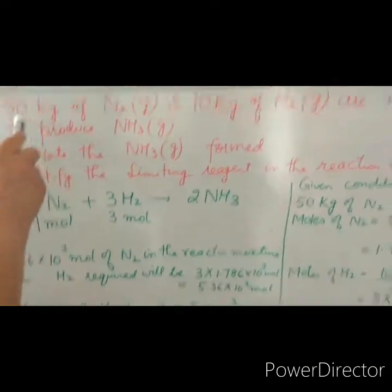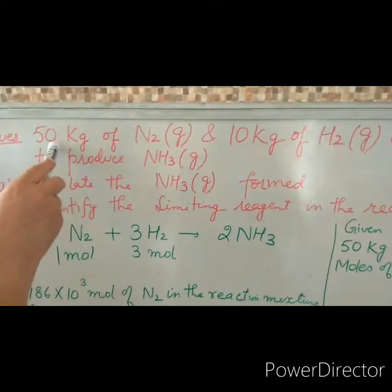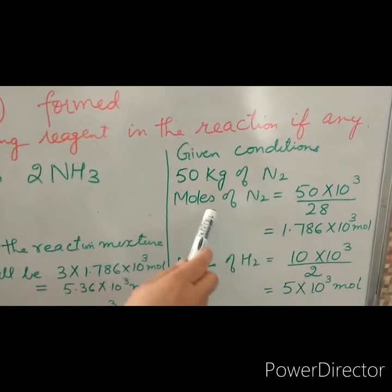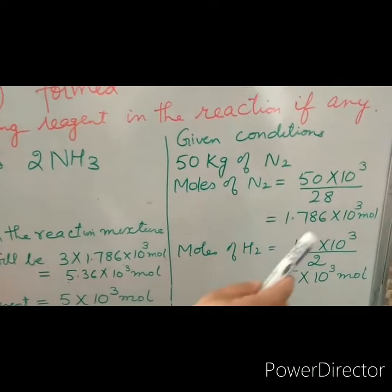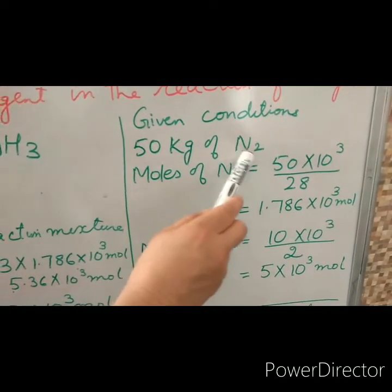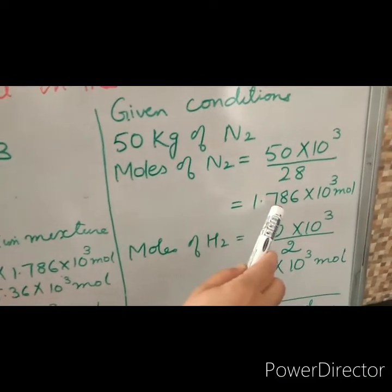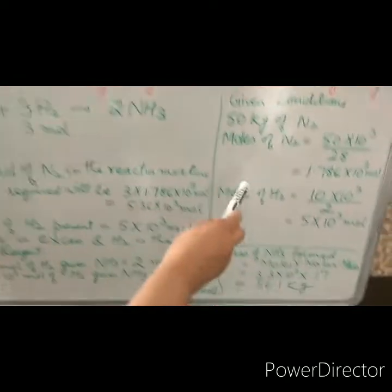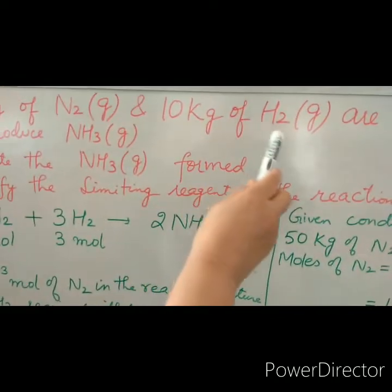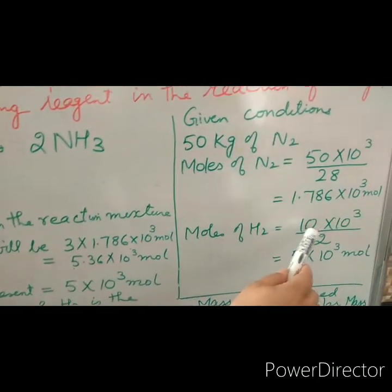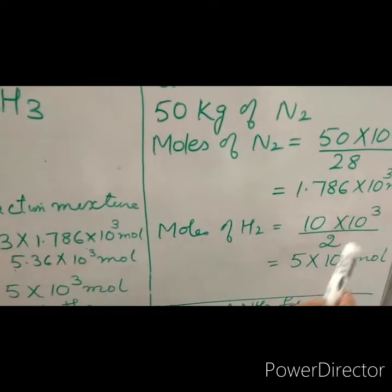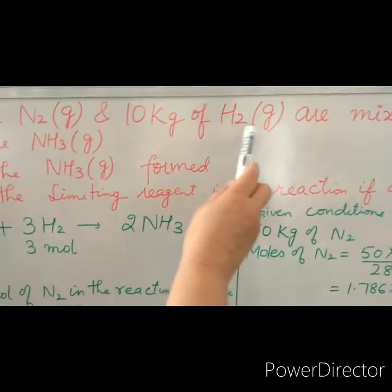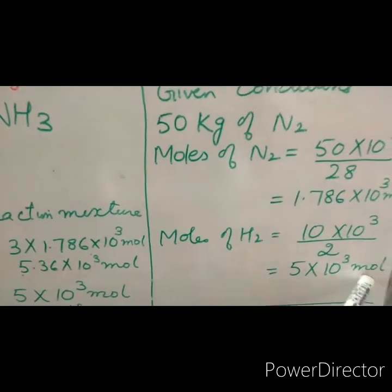Now let us calculate the number of moles available. From 50 kg of nitrogen, the moles will be weight divided by molar mass, giving 1.786 × 10³ moles of nitrogen. The number of moles of hydrogen available from 10 kg of hydrogen is 10 × 10³ divided by 2, giving 5 × 10³ moles of hydrogen.